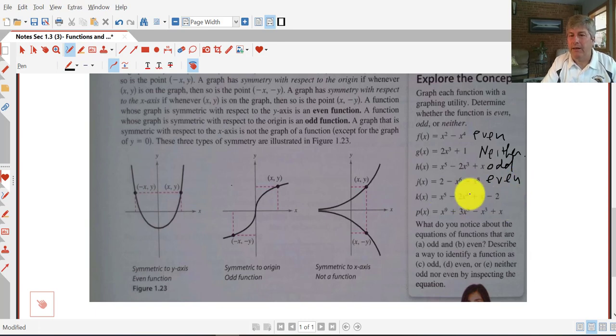Here we have an odd and an even, so with x to the fifth and x fourth, so that's going to be neither. And the final one, exponents are 9, 5, 3, and 1, so those are all odd, so that is going to be an odd function.